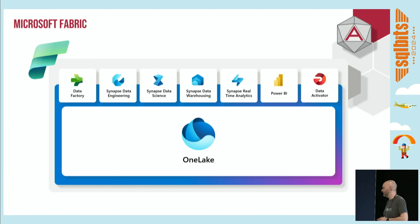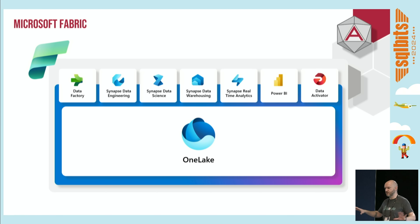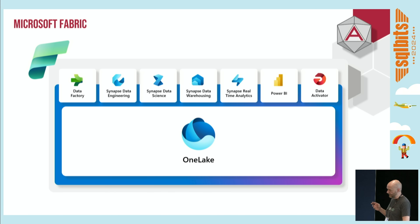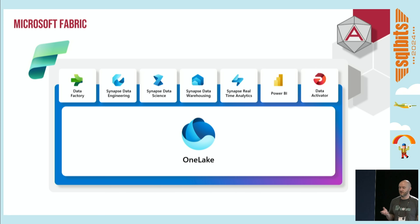Synapse never had that storage layer. One of the other key attributes is the fact that it's a SaaS platform now as well. With Synapse, you had to provision that in Azure, create it, configure things, set up the artifacts - that made things a little more in your own control. With Fabric, it's all software as a service, so Microsoft takes care of a lot of that in the background.